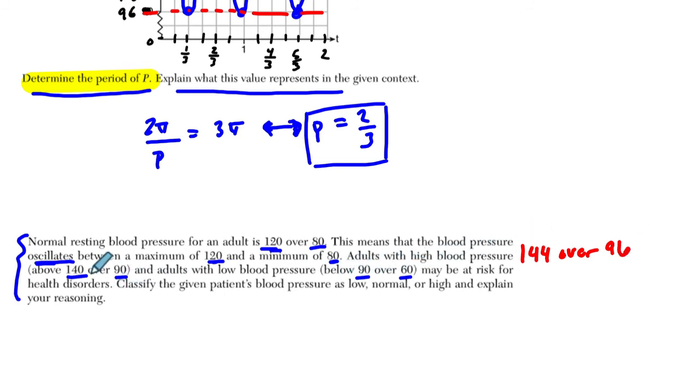Okay well, the oscillation for us is between 144 over 96, right? So we're 144 over 96. Okay, so let's see where does that fit. So I think it's high blood pressure. So this person's in danger, right? It's 144 over 96, and it's oscillating between those two values, and that clearly fits that category.